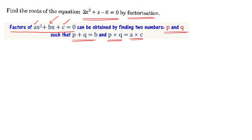So we have a quadratic equation. We have to find two numbers p and q such that p + q = b and p × q = a × c. Comparing 2x² + x - 6 = 0 with ax² + bx + c = 0, the value of a is 2, b is 1, and c is -6.